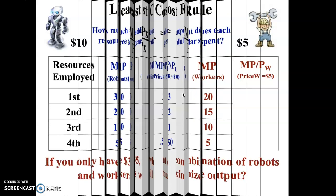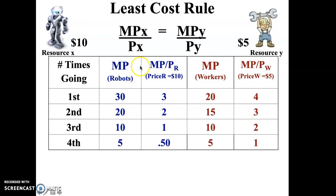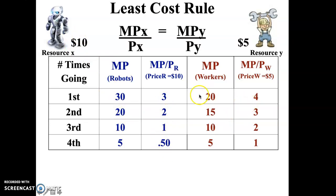For robots, the marginal productivity per dollar of the first robot is 3 — we get that by dividing the 30 units produced by that first robot by the price of $10. The marginal productivity per dollar of the first worker is 4 units per dollar, and the marginal productivity per dollar of the second worker is 3 units per dollar.